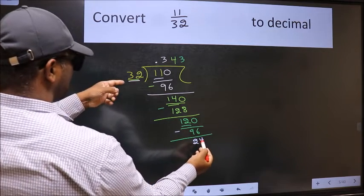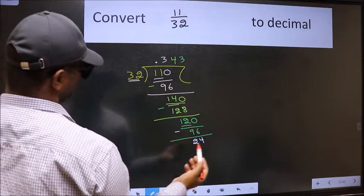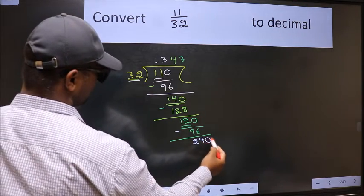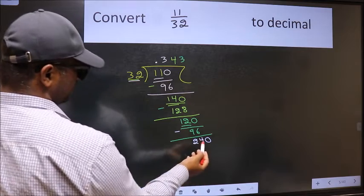24 is smaller than 32 and we already have the decimal. So, take 0. So, 160.